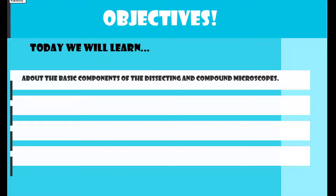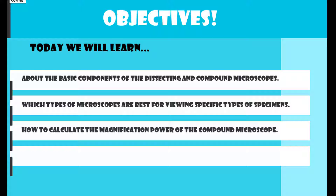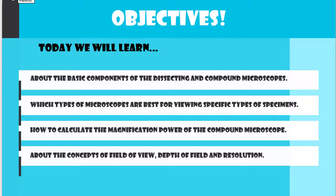Objectives. Today we will learn about the basic components of the dissecting and compound microscopes. We will learn which types of microscopes are best for viewing specific types of specimens. We will learn how to calculate the magnification power of the compound microscope. And we will learn about the concepts of field of view, depth of field, and resolution.